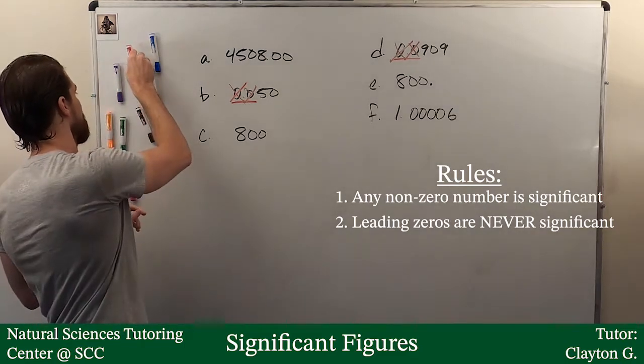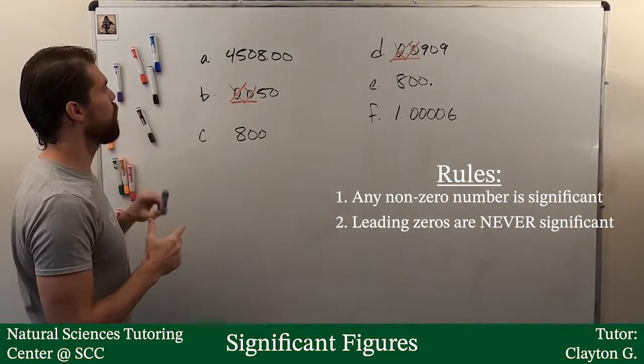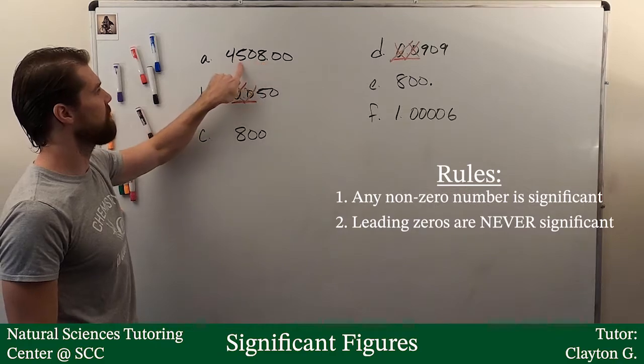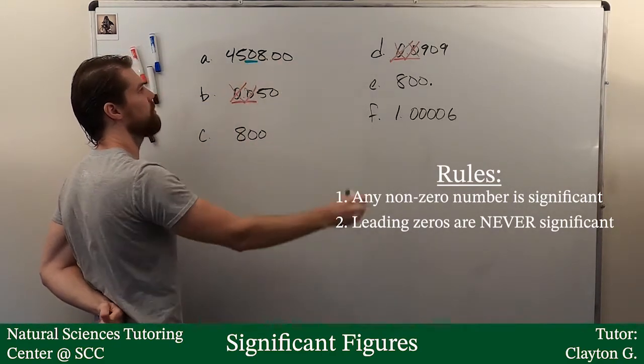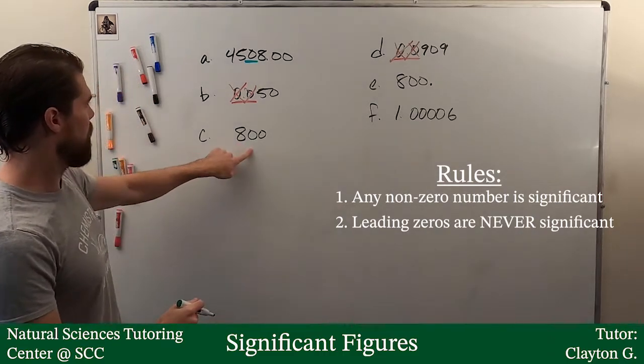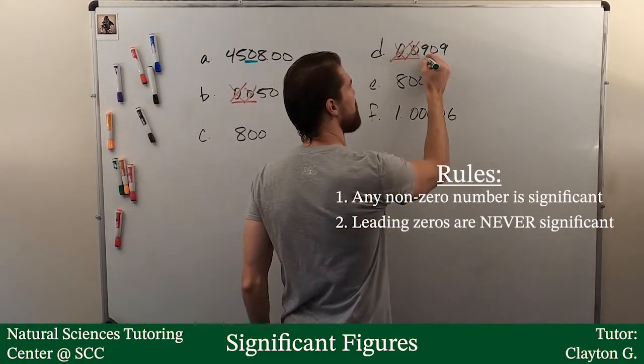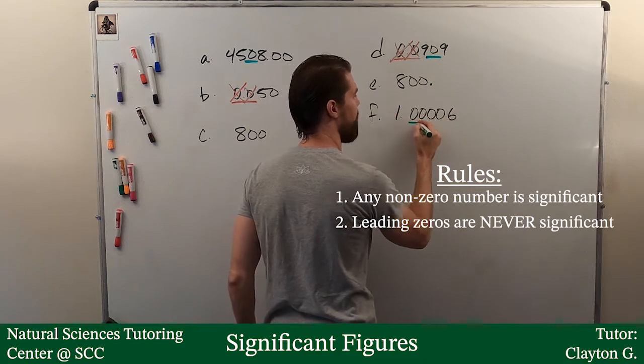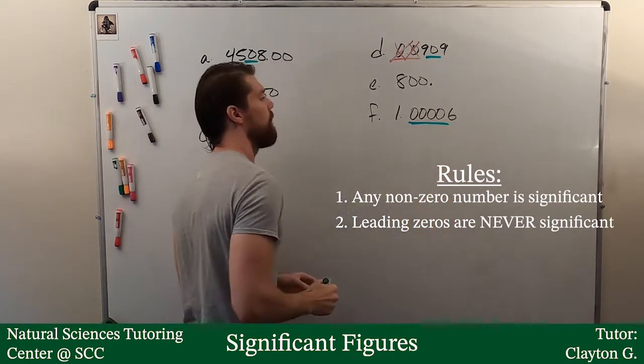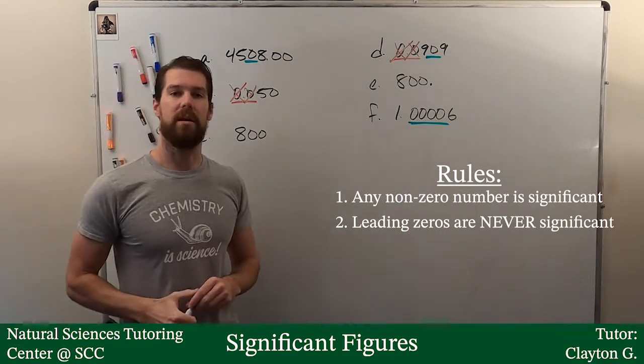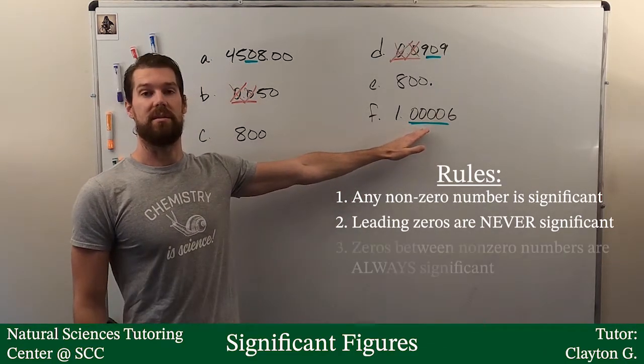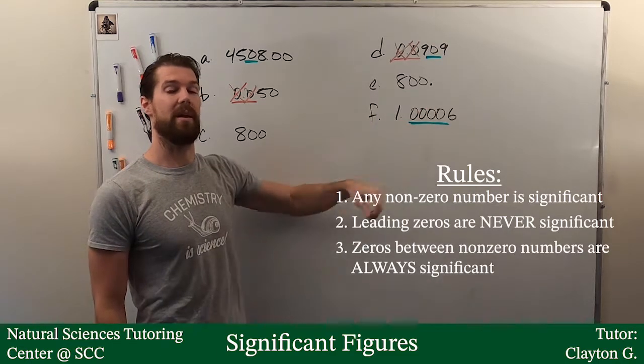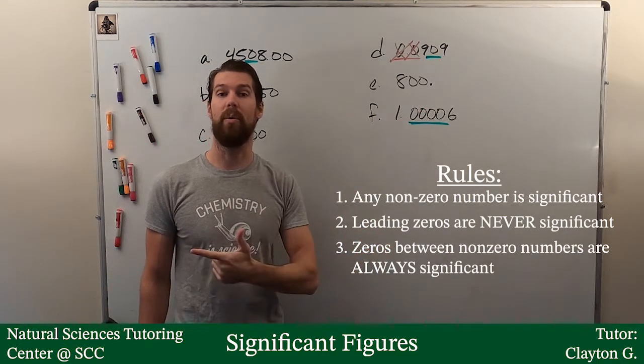Let's see, zeros that are between two non-zero digits. So, this one, for instance, is between two non-zero. Oh, here is another one that is between two non-zeros and here we have four of them right in a row. If the zeros are between two non-zero digits, it is always significant. Always. So, we have a never, we have an always.